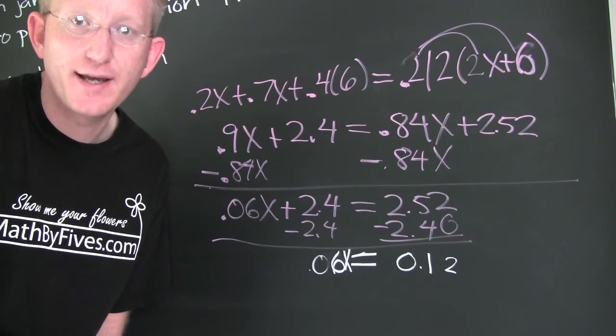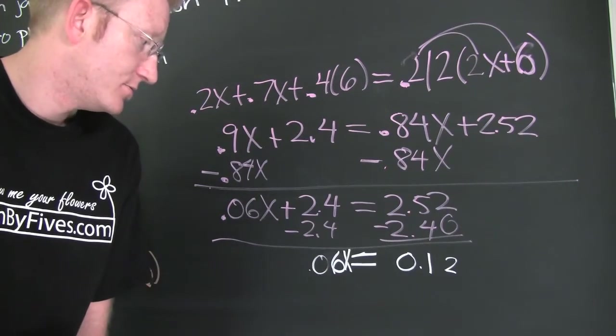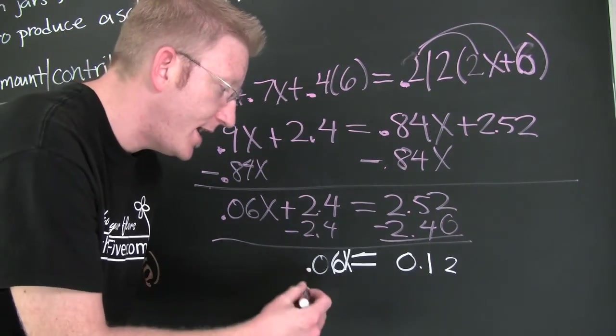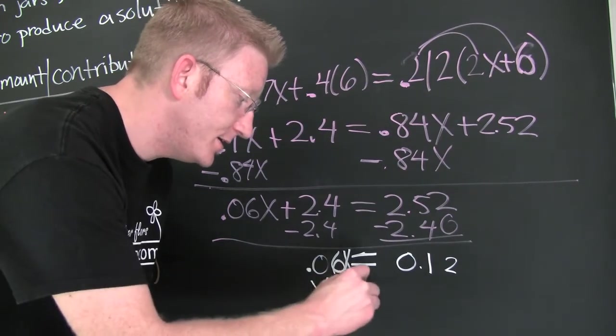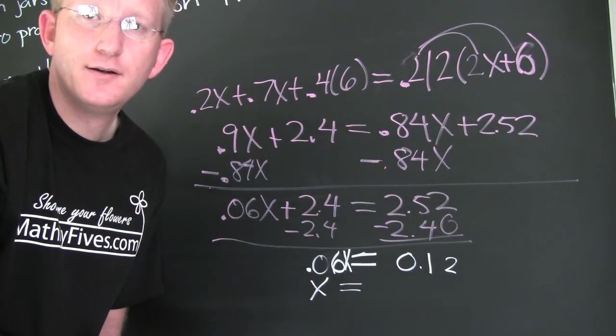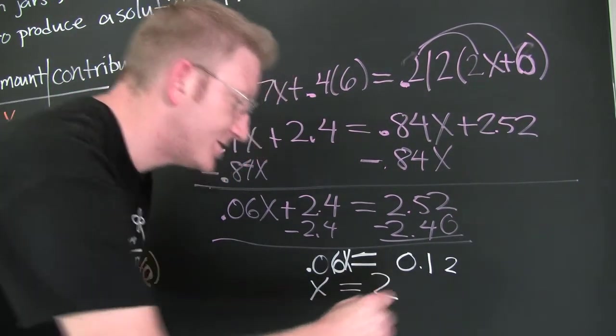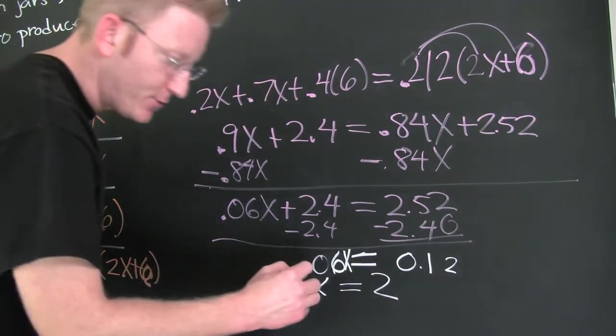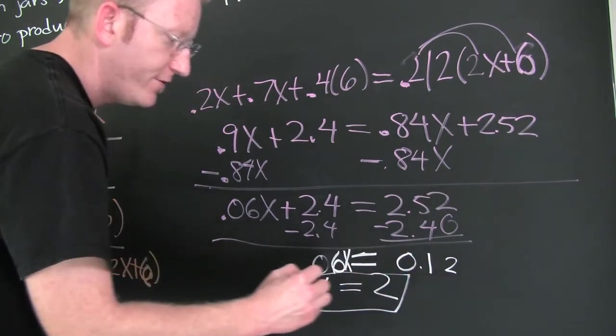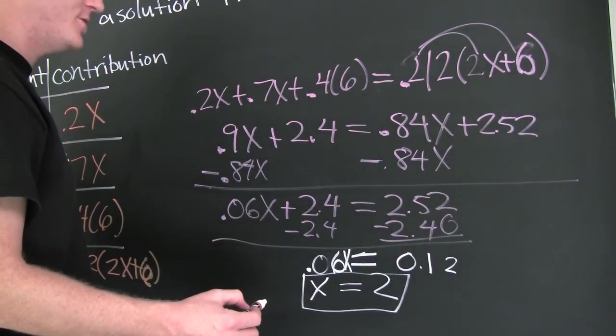Then I go and I divide both sides by 0.06. And then, X is going to turn out to be 2. So then squeezed down here, we find that X is 2.